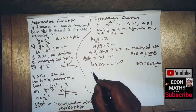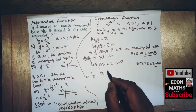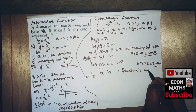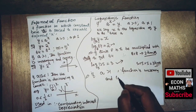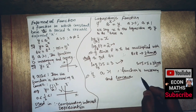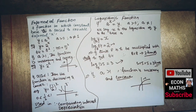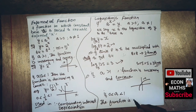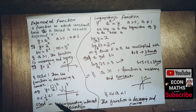Looking at the graphical depiction of the logarithm function: if a is greater than 1, the function is increasing and concave. If a lies between 0 and 1, the function is decreasing and convex, as we can see from the graph.